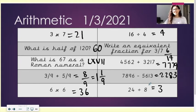And here are your answers. 3 times 7 equals 21. What is half of 120? 60.